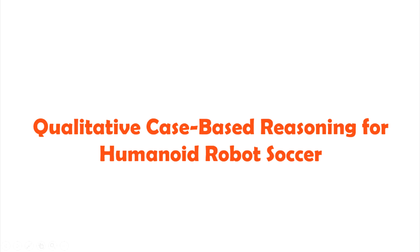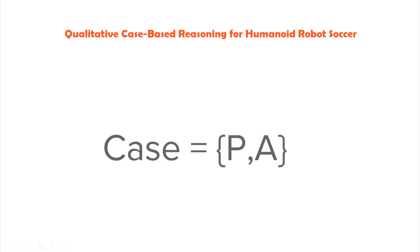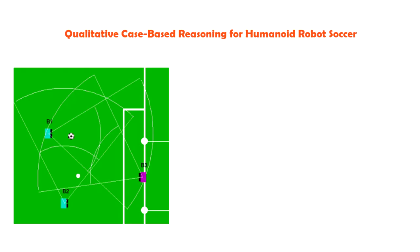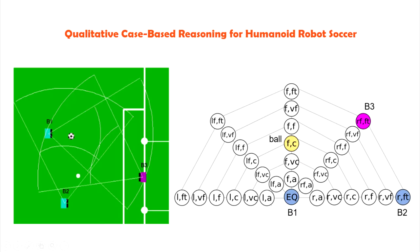In the CBR system, we have defined a case as a problem description and a solution description. The problem description corresponds to the qualitative spatial relations between the robot and the objects in the environment, given by the qualitative orientation and distance of each object from the robot's point of view. And the solution description is composed of a sequence of actions each robot must perform to solve the problem.